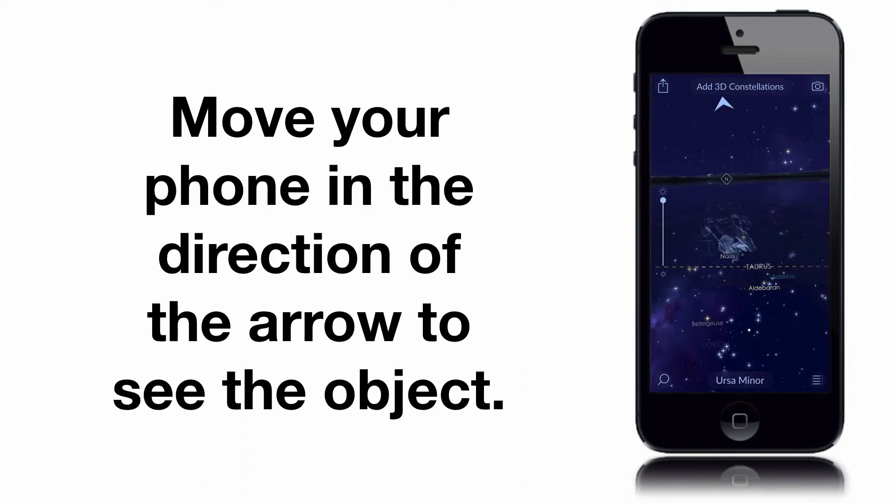Now, move your phone in the direction of the arrow to see the object. Hold your arm at arm's length and move it until the constellation or object is in the center of your field of view.